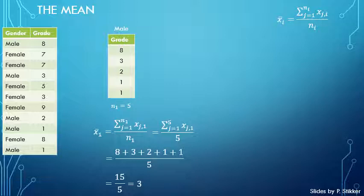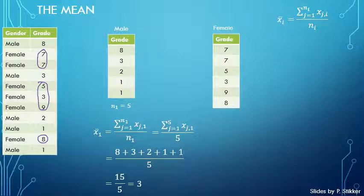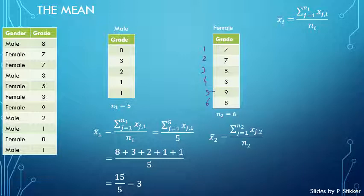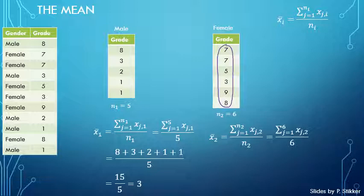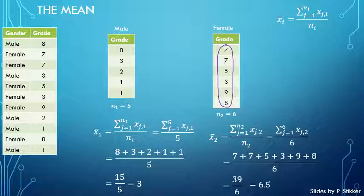Now we do the same for the females. Selecting all the female scores — 7, 7, 5, 3, 9, and 8 — there are 6 in total, so N2 equals 6. We fill that into the formula. Adding all the scores: 7 plus 7 plus 5 plus 3 plus 9 plus 8 over 6, which is 39 over 6. Therefore the average of the female scores is 6.5.